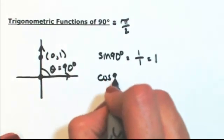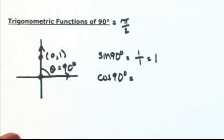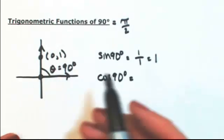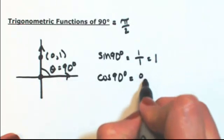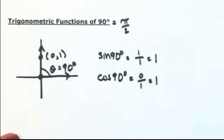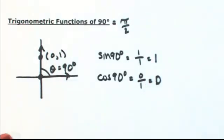Cosine of 90 degrees is going to be adjacent over hypotenuse. The adjacent — we didn't go anywhere left or right, so that's just 0. The hypotenuse is 1, so 0 over 1 is 0.